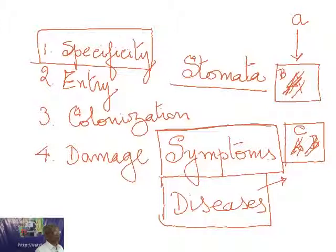Crop rotation is a very good policy — the best policy for avoiding diseases. Because a particular pathogen can attack only a particular host, if you keep changing the host, the pathogen will not be able to get the same host, and by this method you can prevent the occurrence of diseases to some extent.